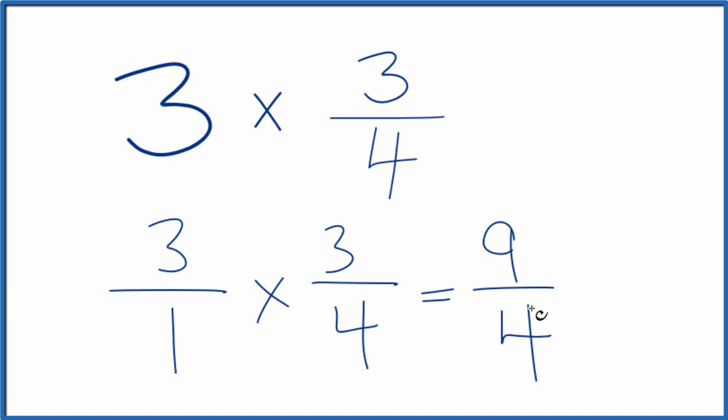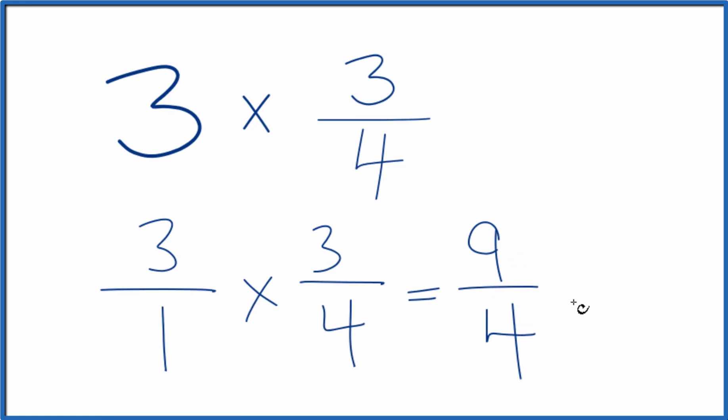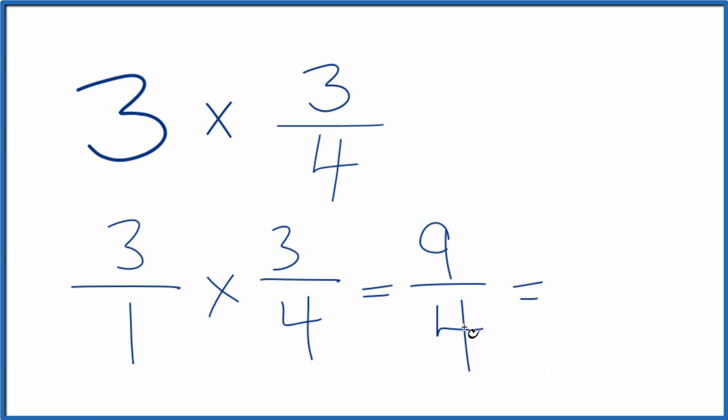Note that 9 fourths, that's an improper fraction. The numerator is larger than the denominator. We could change it to a mixed number. 4 goes into 9, see, 2 times 4 is 8 with 1 left over. Bring the 4 across. So 9 fourths, that's the same as 2 and 1 fourths.